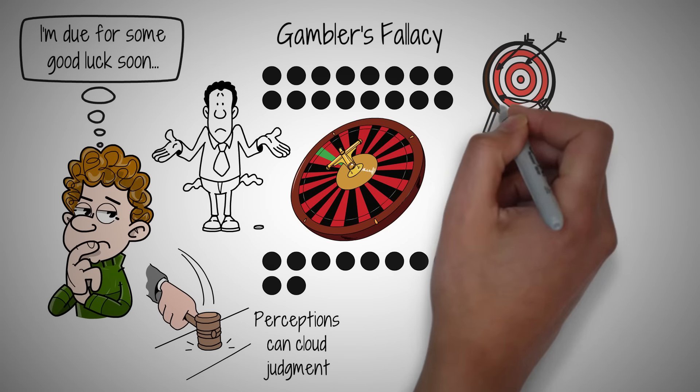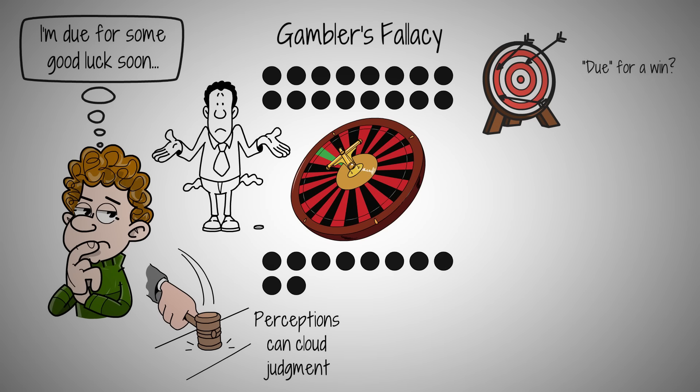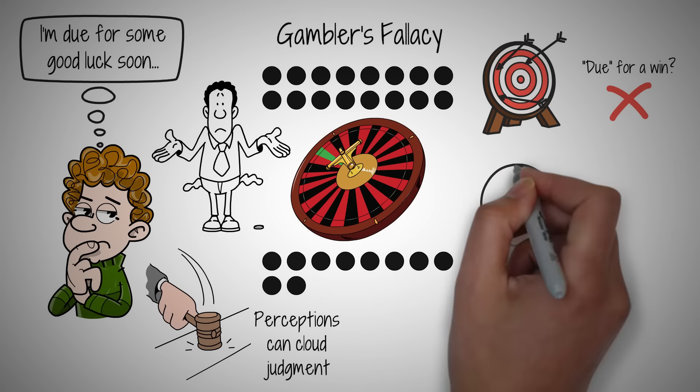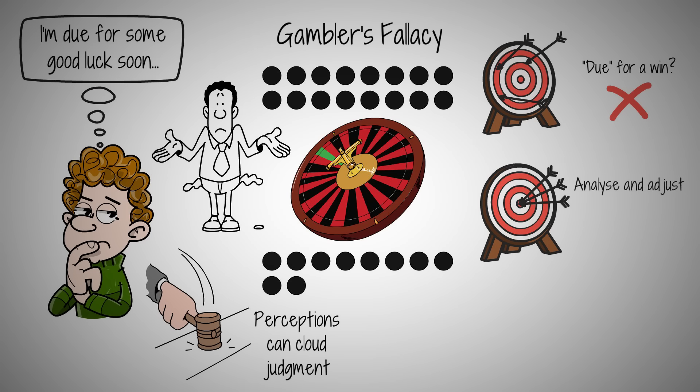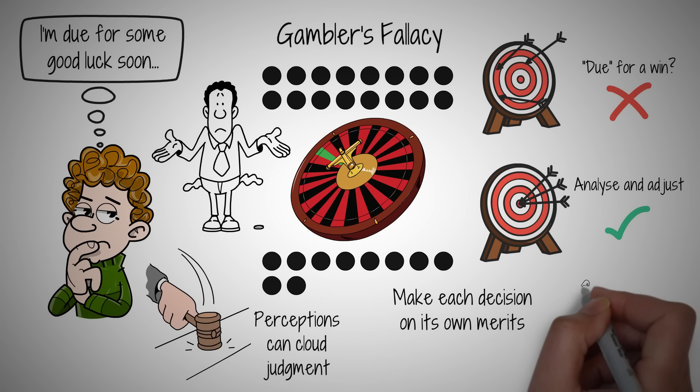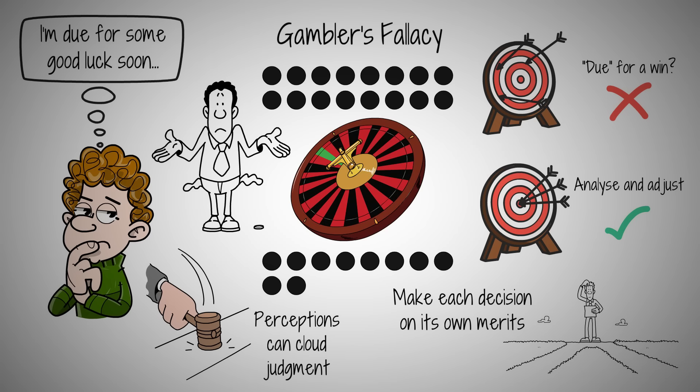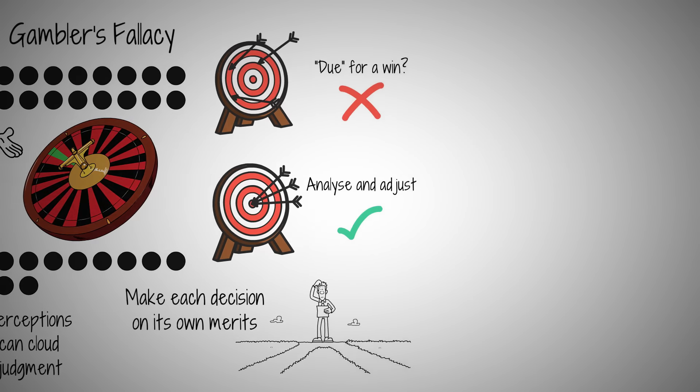Understanding this teaches us how our perceptions can cloud judgment. If you faced repeated failures in personal goals, you might think you're due for a win. Instead, analyze why past attempts didn't work and adjust accordingly, rather than relying on luck to change your fortunes. Each decision should be made on its own merits, not influenced by previous unrelated events. By overcoming the gambler's fallacy, you can make more rational decisions and increase your chances of success in all areas of life.